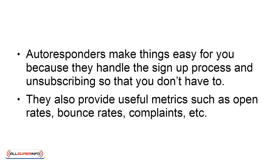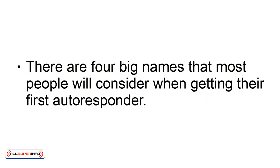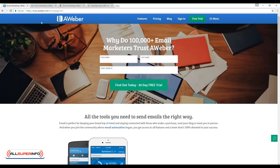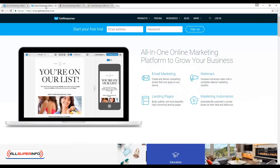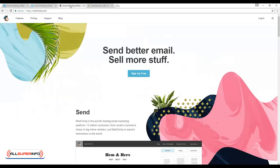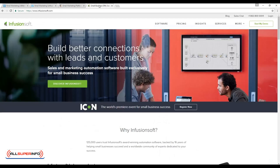They also provide useful metrics such as open rates, bounce rates, complaints, etc. There are four big names that most people will consider when getting their first autoresponder. These are Aweber, GetResponse, MailChimp, and Infusionsoft.